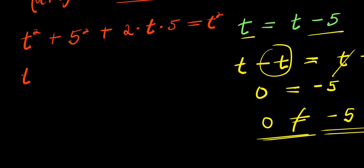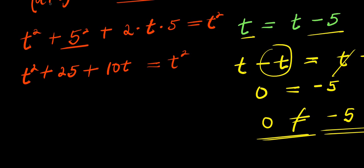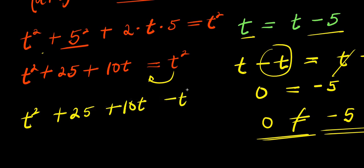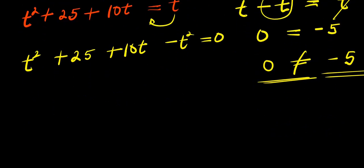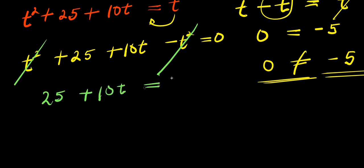So from here, I have t squared plus 25 plus 10t, and this equals t squared. Moving terms over, I have t squared plus 25 plus 10t minus t squared equals 0. So we can eliminate t squared, and this gives us 25 plus 10t equals 0.